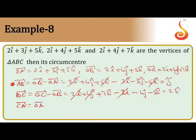So you can take CA, that is OA minus OC. What is OA? 2i plus 3j plus 5k minus 2i minus 4j minus 7k. Here 2i and 2i cancel, so you get minus j minus 2k.